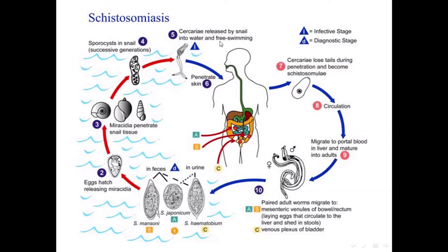الـ miracidia لقيت الـ appropriate snail، عملت penetration لها وصارت موجودة في snail tissue. Inside snail رح يصير development — رح تمر في two generations: في البداية رح تتحول لـ sporocyst، after that to cercariae. Inside snail: miracidia developed to sporocyst then to cercariae. After that، this cercariae released by snail into water and free swimming — رح تطلع من السنيل وتصير free swimming in water.